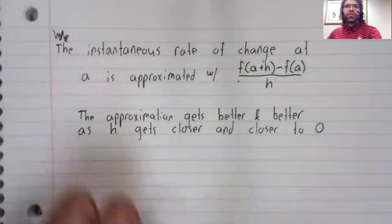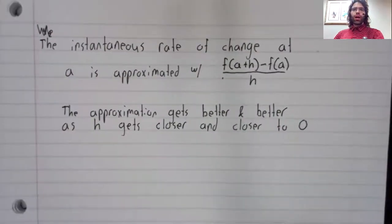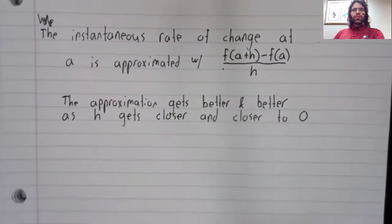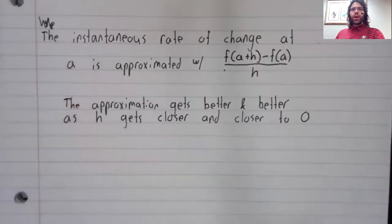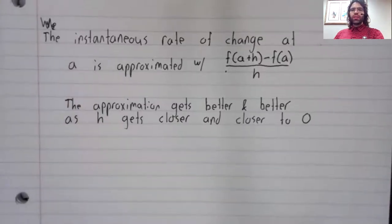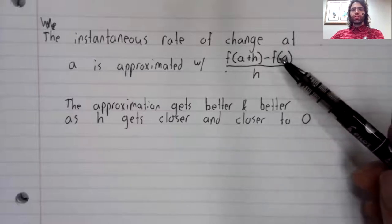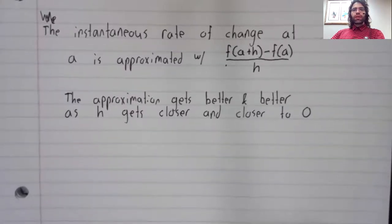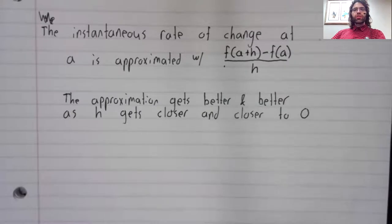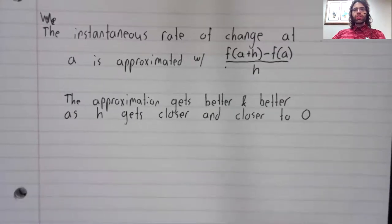This is what we've seen so far: that the instantaneous rate of change of a function at some value a can be approximated using this difference quotient, f of a plus h minus f of a divided by h. And the approximation gets better and better as h gets closer and closer to zero.